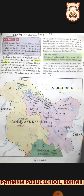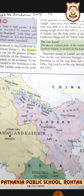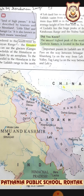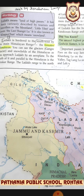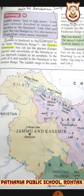Did you know the second highest peak in the world, K2 (also called Godwin-Austen), is located in the Karakoram? Important passes in Ladakh include Zojila Pass on the way between Srinagar and Leh, Khardungla on the way from Leh to Nubra Valley, and Taglangla on the way between Manali and Leh.